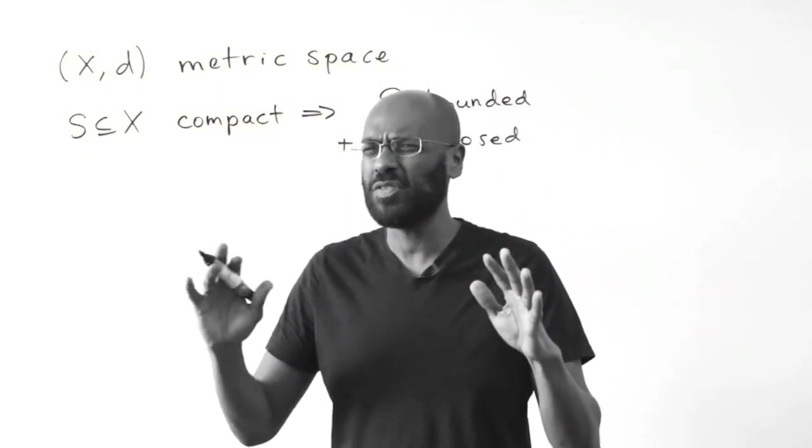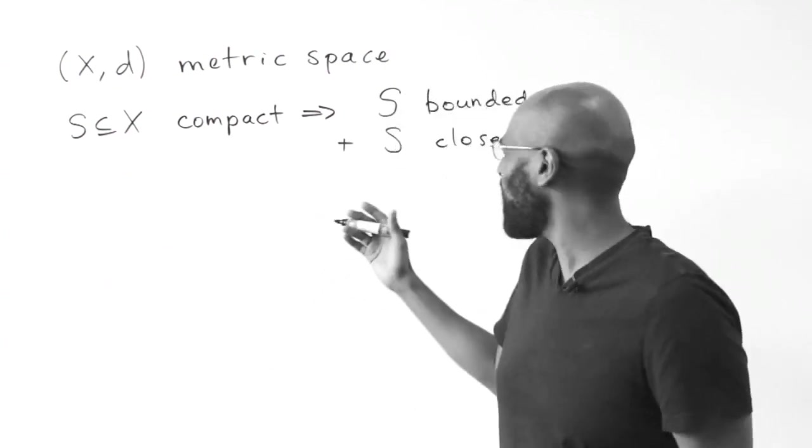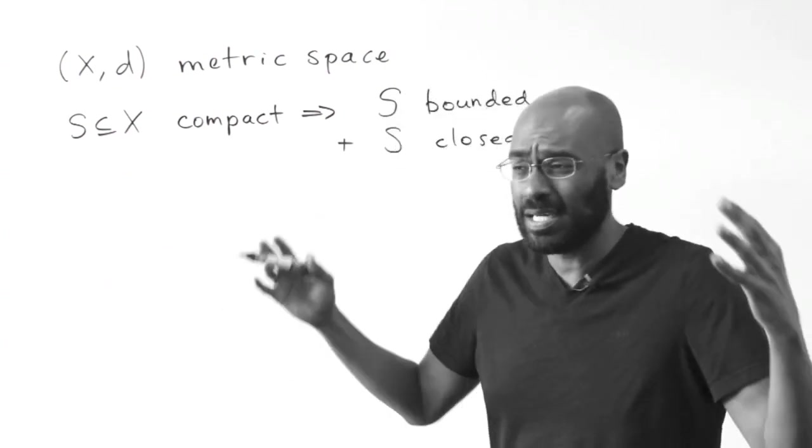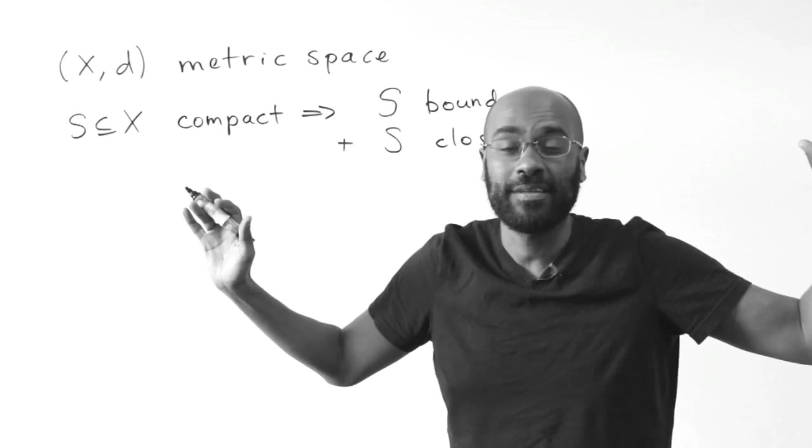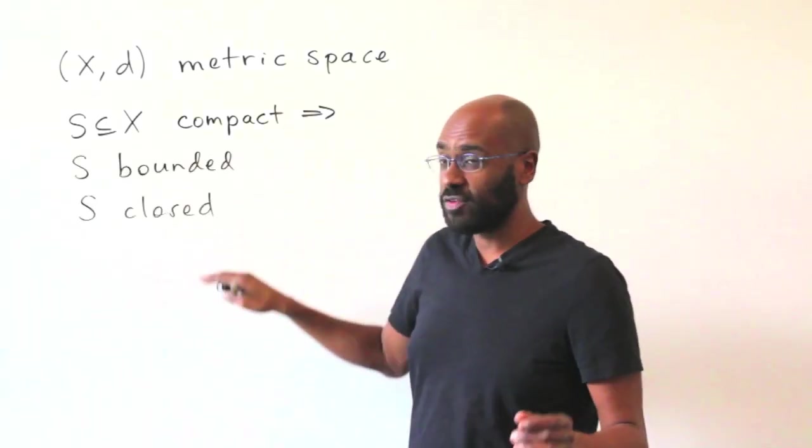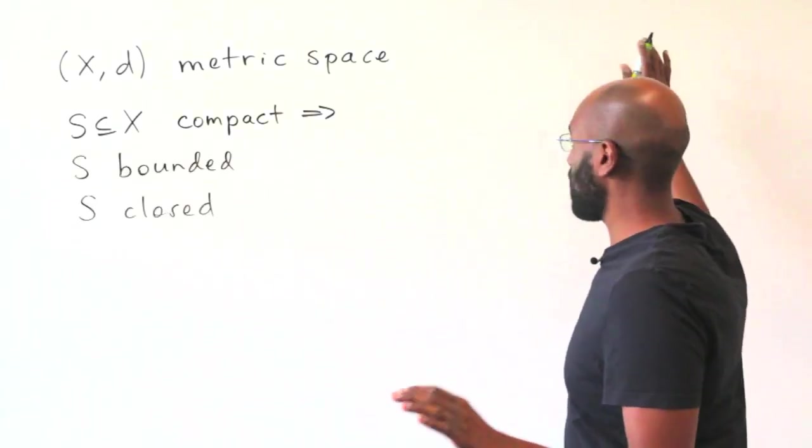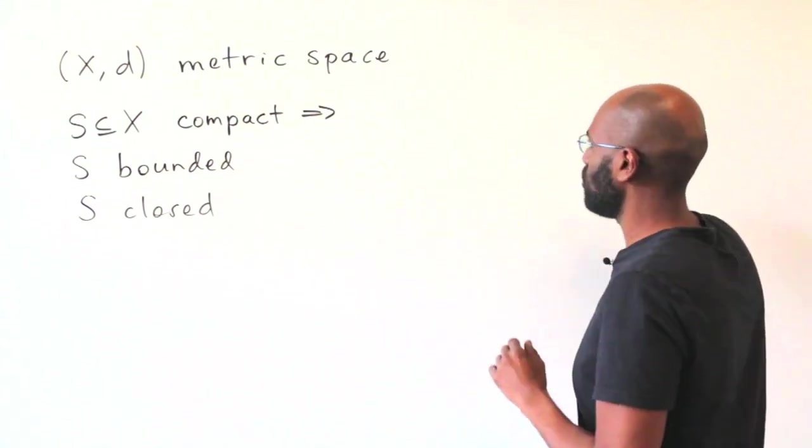But remind me what each of these moving pieces are, like what's the compact set and the bounded and the closed? Okay, so we're going to remind ourselves of the definitions of these things and place them on the board so we have use of them while we're trying to prove these.